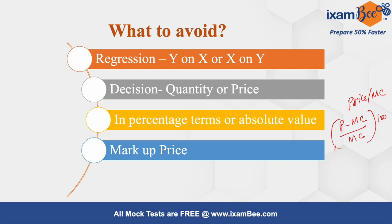Many students get confused by the definition — since marker price is the excess of price over marginal cost, they tend to find it by just taking the difference between price and marginal cost. That is not correct. In absolute terms, use the formula: price divided by marginal cost. In percentage terms, use: price minus marginal cost, divided by marginal cost, into 100. Don't use the wrong formula.